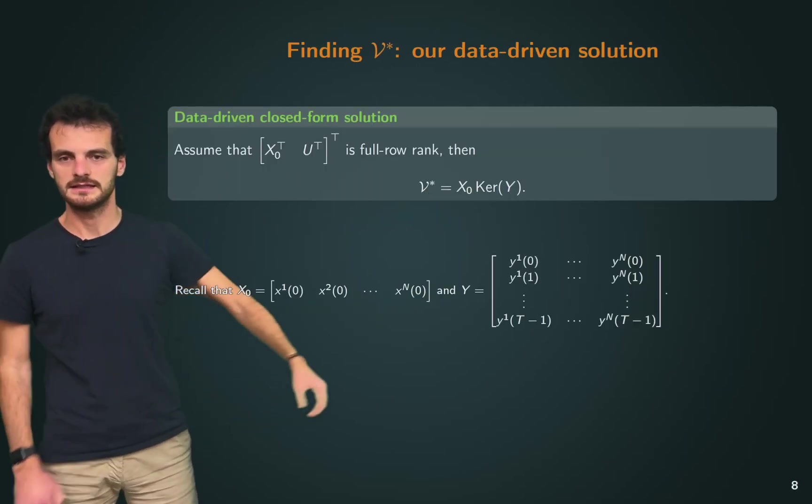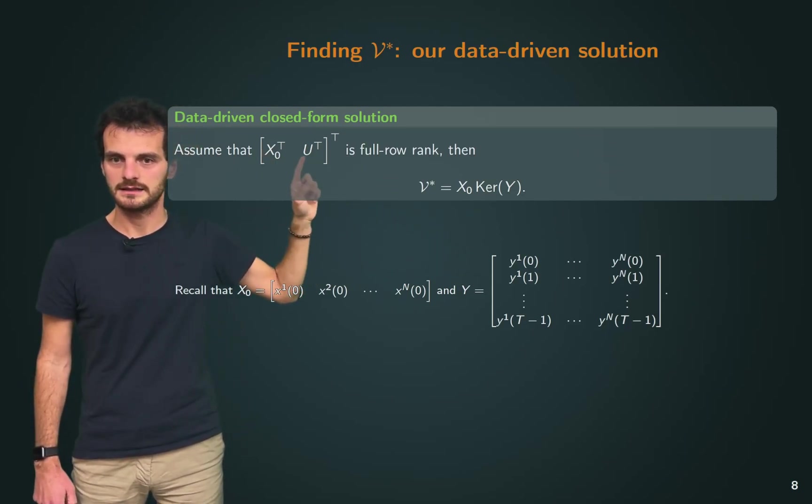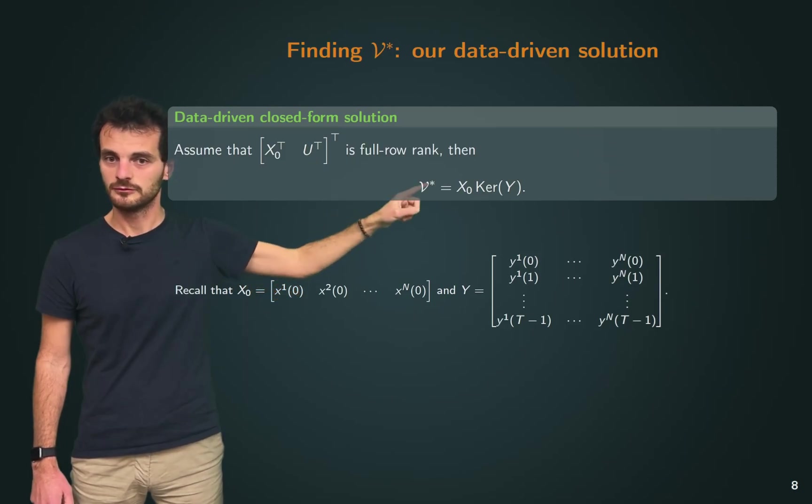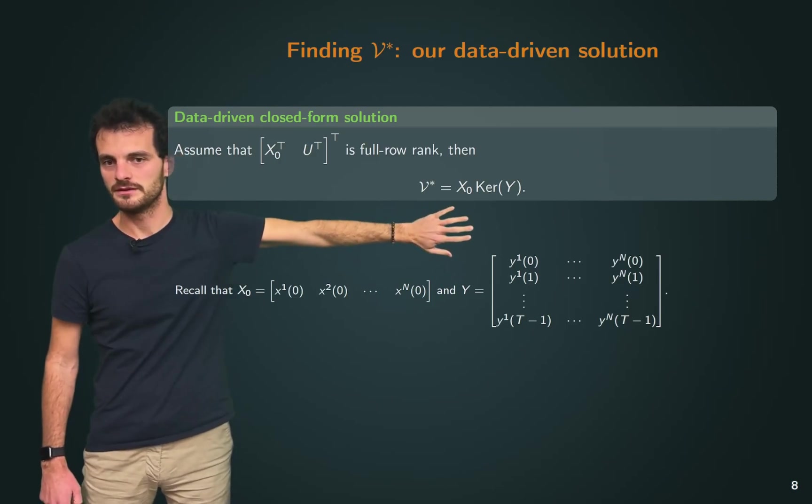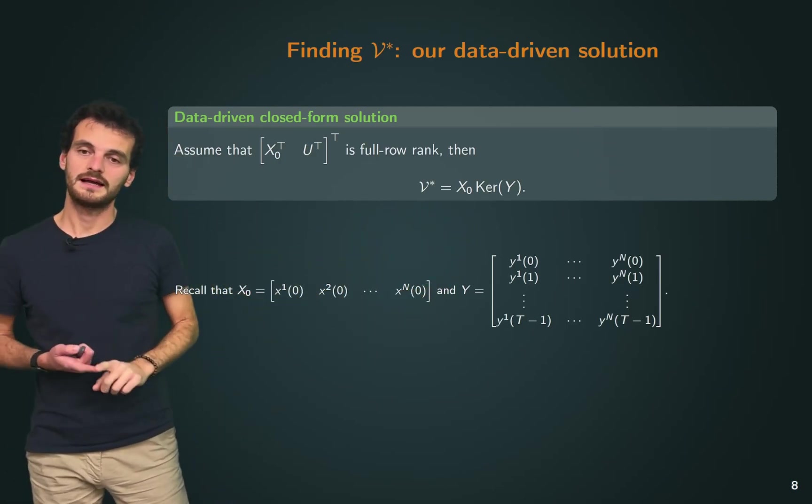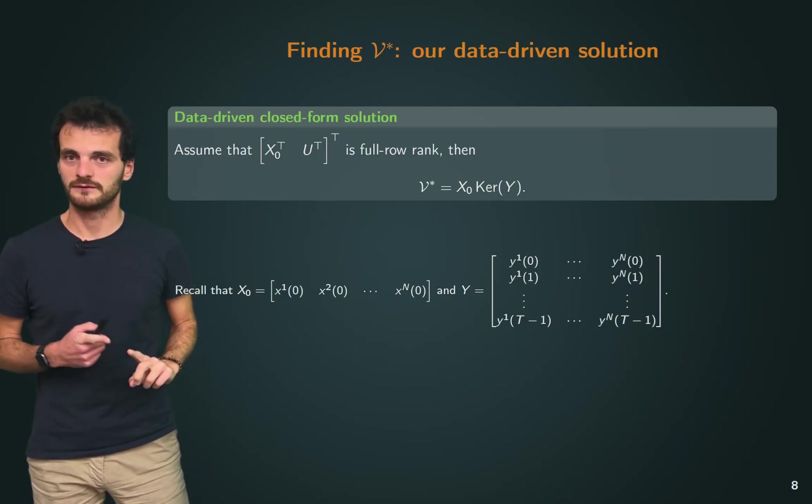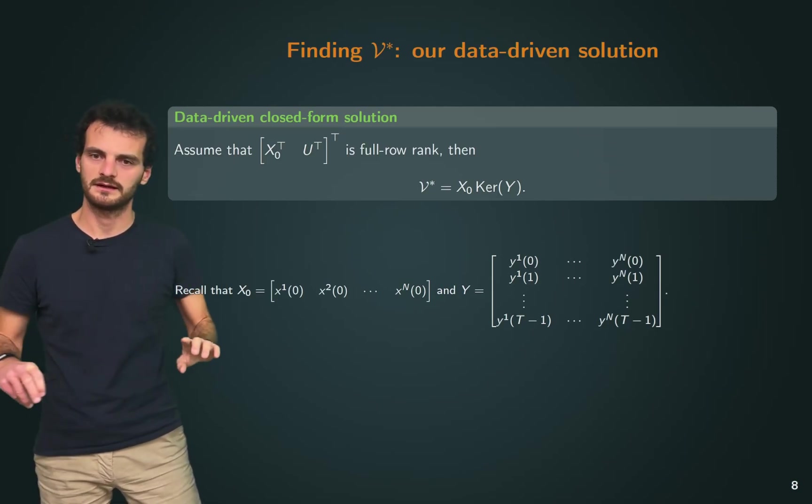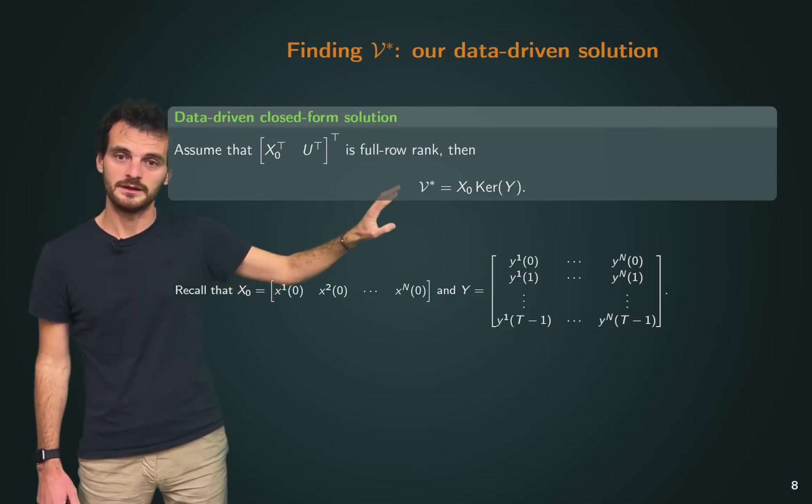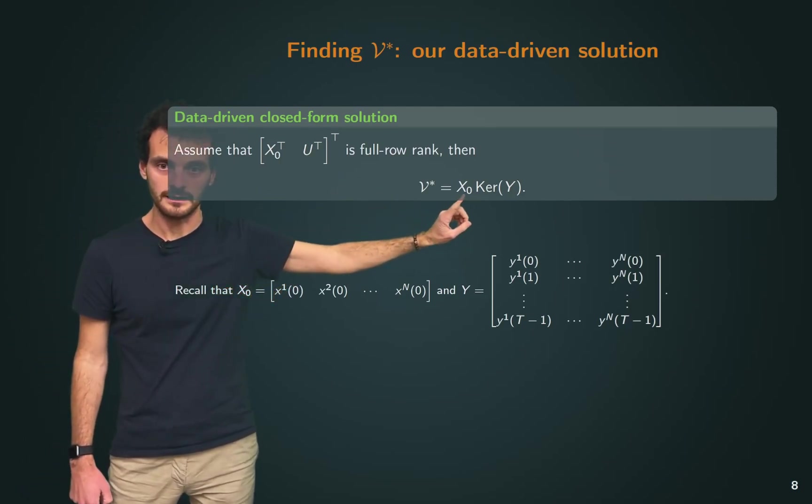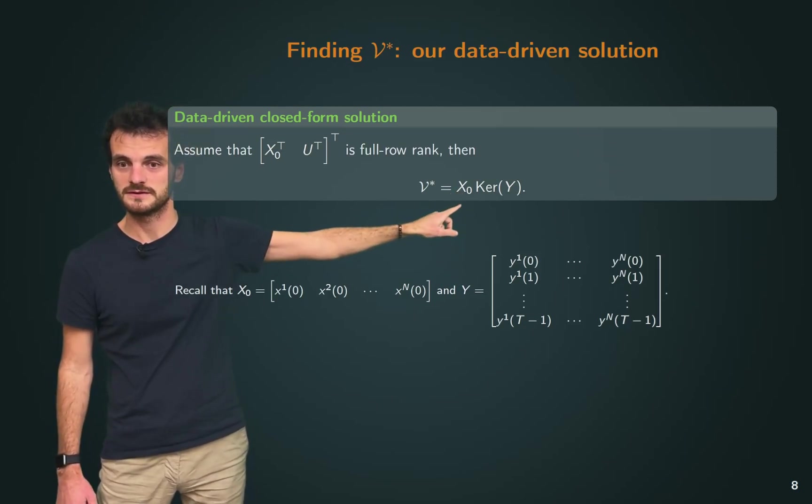So, our solution to finding V* is simply this. If we collect enough data such that [X; U] is full row rank, [X_0; U] is full row rank, then V* can be found as simply this matrix multiplication. I want to highlight a few things about this solution. One, we're not making any assumption on the nature of the system. It doesn't have to be controllable, doesn't have to be observable. Second, the kind of data that we use is really limited. We're not using input data and we're not using state trajectories. We're only using the initial states.